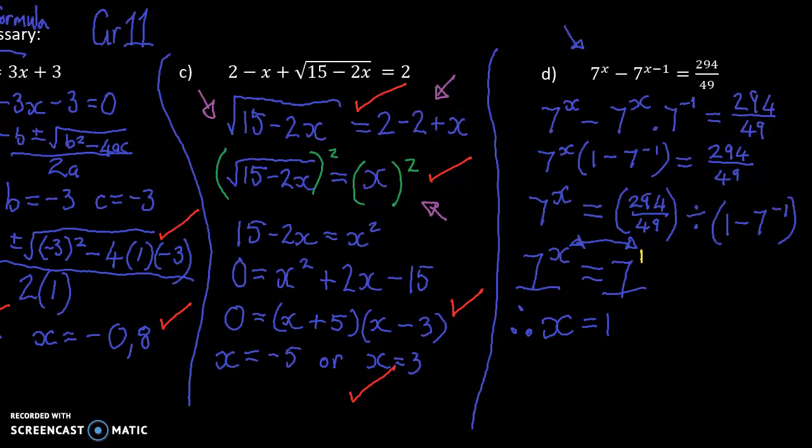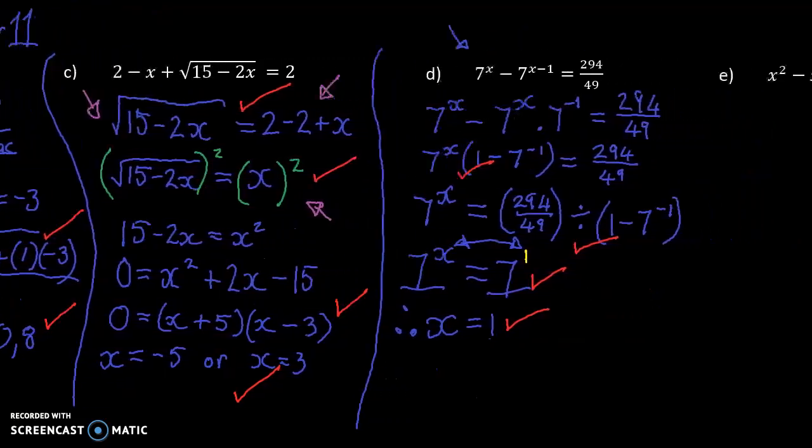In terms of mark allocation, I would give a mark for firstly being able to deal with this side. However you deal with it, I would give that mark. I would also give a mark for being able to do this calculation over here. So I'm not necessarily giving a mark for simplifying the fraction. I'm more giving a mark for being able to isolate 7 to the power of x. Lastly, I would give a mark for saying 7 to the power of x equals 7. And finally, the answer is x equals 1. And there we go. Four mark question.